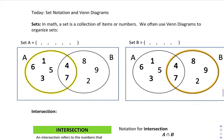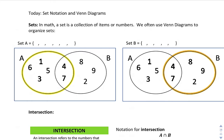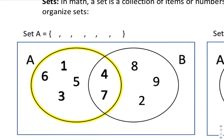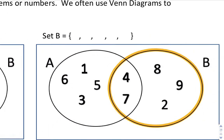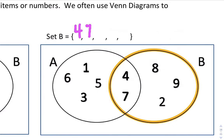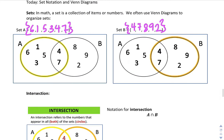Today we're going to look at set notation and Venn diagrams. In math, a set is a collection of items or numbers. We often use Venn diagrams to organize sets. So here, in this Venn diagram, you have two sets, A and B. The numbers in set A are 6, 1, 5, 3, 4, and 7. And notice the curly brackets for set notation. In set B, we have the numbers 4, 7, 8, 9, and 2 are in set B. Again, notice the curly brackets here. That's set notation.